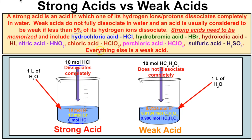There are about seven strong acids in chemistry, and all other acids are weak acids. The seven strong acids are: hydrochloric acid (HCl), hydrobromic acid (HBr), hydroiodic acid (HI), nitric acid (HNO₃), chloric acid (HClO₃), perchloric acid (HClO₄), and sulfuric acid (H₂SO₄). Everything else is going to be a weak acid.